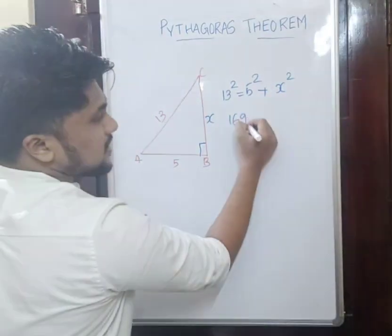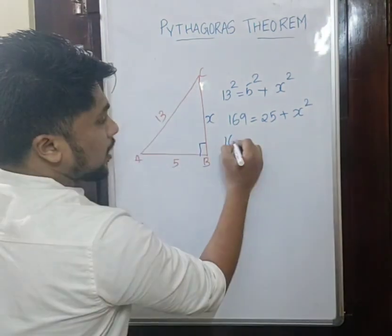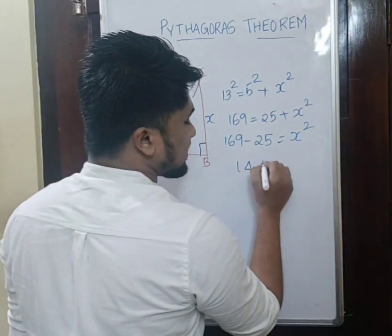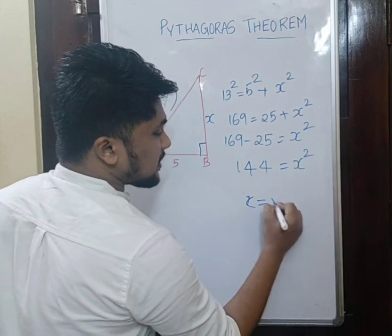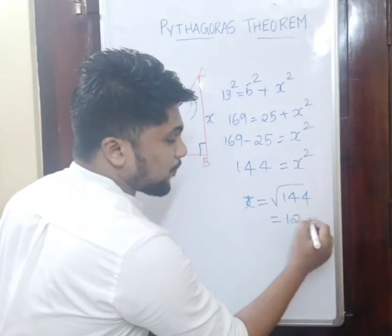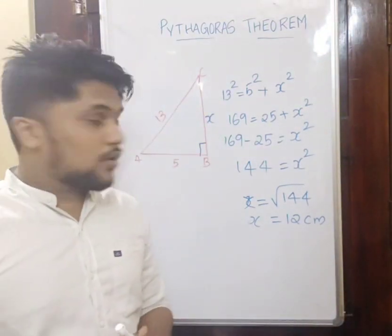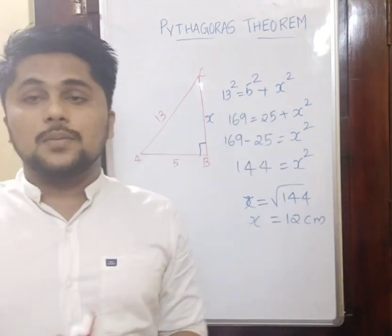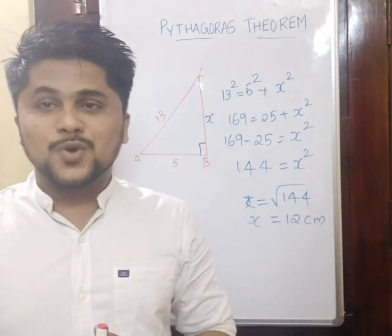So 13 squared equals 5 squared plus x squared, where x is the height of the wall. 13 squared is 169, and 5 squared is 25. Taking 25 to the other side: 169 minus 25 equals x squared. That gives us 144 equals x squared, so x equals the square root of 144, which is 12 cm. That is the height of the wall. The Pythagoras theorem is applicable in real life too — in architecture and navigation. Hope everyone understood. Thank you.